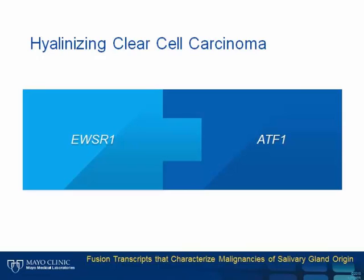Hyalinizing clear cell carcinoma is characterized by a translocation t(12;22) that results in a fusion transcript EWSR1-ATF1 in over 80% of cases. EWSR1 belongs to the TET family of transcription factors, and ATF1 encodes a cyclic AMP-dependent transcription factor. Similar to the fusion gene in mammary analog secretory carcinoma, EWSR1-ATF1 has been noted in several other malignancies: clear cell sarcoma of tendons and aponeuroses, angiomatoid fibrous histiocytoma, and clear cell sarcoma of the gastrointestinal tract.